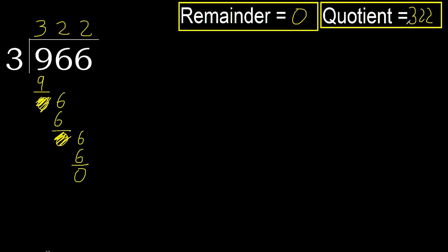Ok, 0 — therefore 966 divided by 3 is here.